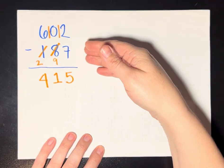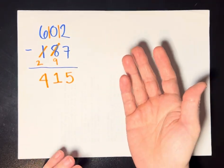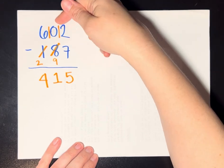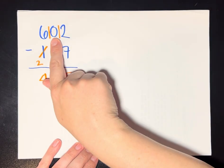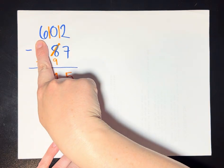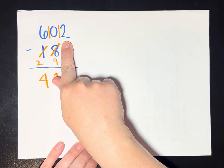You can see for this particular example, that might have actually been faster than our standard algorithm because in our standard algorithm, I would have to figure out what to do with this 0, have to borrow from the 100s place in order to get some extra 1s.